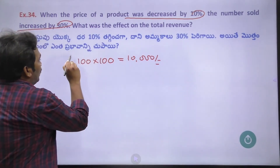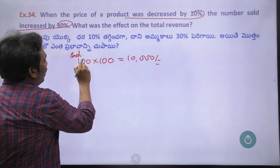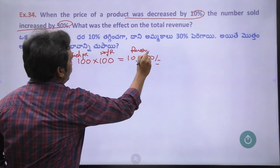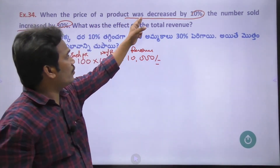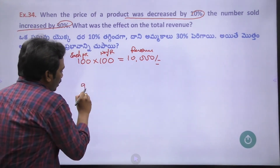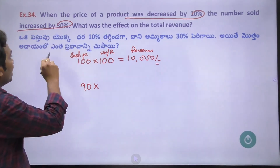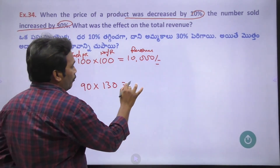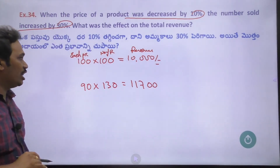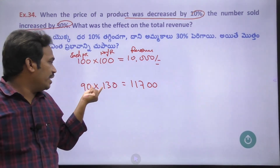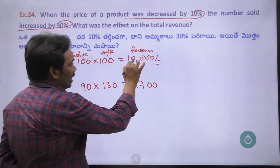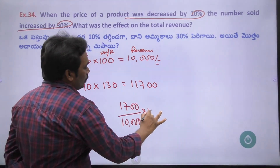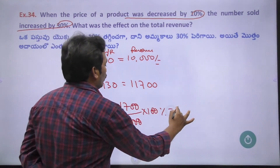So each piece value and total number of pieces gives the revenue. The price was decreased by 10%, so the new price factor is 90. The number sold increased by 30%, so the new quantity factor is 130. Calculating: 90 × 130 = 11,700 compared to original 100 × 100 = 10,000. That gives an increase of 17 percent.